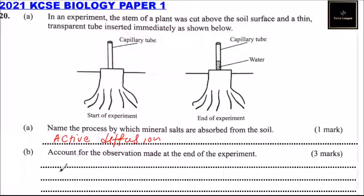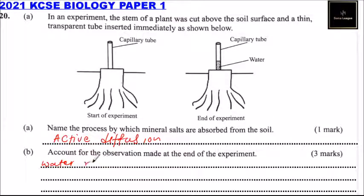Part B: account for the observation made at the end of the experiment. The water rises due to root pressure.